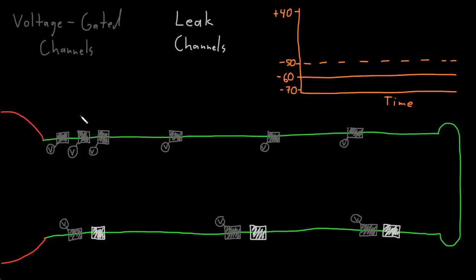To talk about the action potential, I need to introduce an entirely new type of channel that I've drawn in dark gray with this little 'v'. These are voltage-gated ion channels. The membrane of an axon has many voltage-gated ion channels, most of which open when the membrane potential crosses a threshold value.